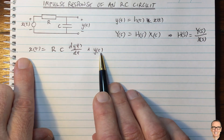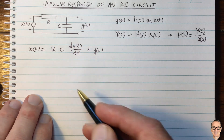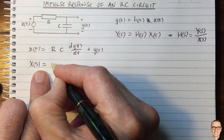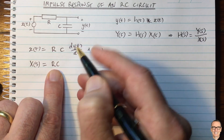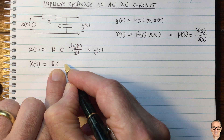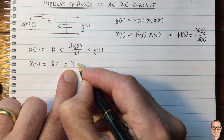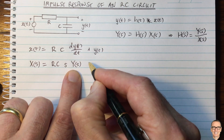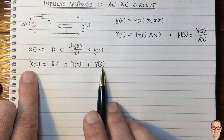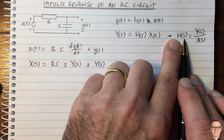Now we have an equation that relates the input signal to the output signal. We can take the Laplace transform of each term and look in the Laplace domain. The Laplace transform of X equals R times C, and using the derivative property — where taking a derivative gives us S times the Laplace transform of the signal — it equals S times Y(S), plus the Laplace transform of Y(t). We can collect all the Y(S) terms together and divide by X(S) to get the system function.